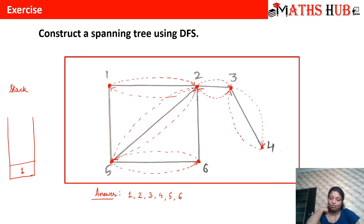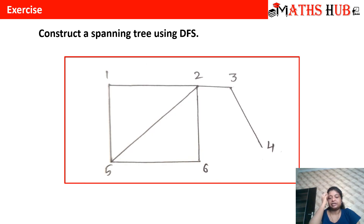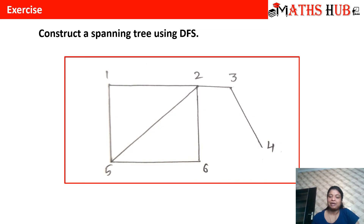The spanning tree is: one to two, two to three, three to four, four to five, five to six. This gives us our answer. It is not necessary that this spanning tree is a unique one — from one we had moved to vertex two, but you could also move to vertex five. So this is one of the spanning trees obtained by the DFS method, and it is not a unique one.